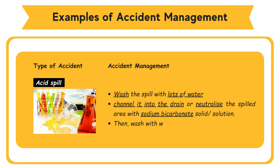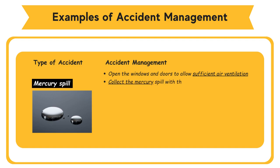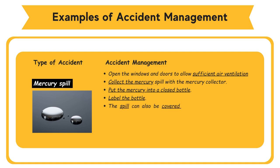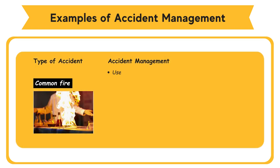For a mercury spill: open the windows and doors to allow sufficient air ventilation; collect the mercury with a mercury collector; put the mercury into a closed bottle and label it. The spill can also be covered with sulfur or zinc powder before being collected. For a volatile or inflammable solvent spill: wipe it off with a cloth and throw the cloth into appropriate waste. For a common fire: use a fire extinguisher or splash with a pail of sand.